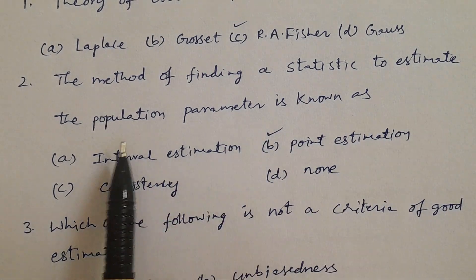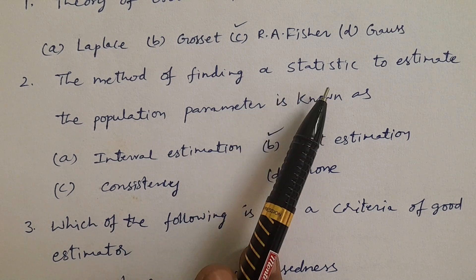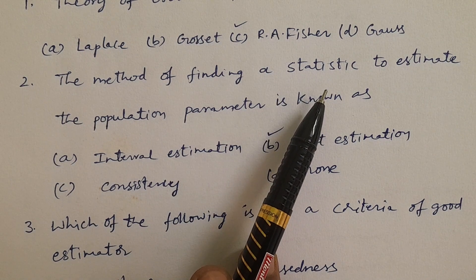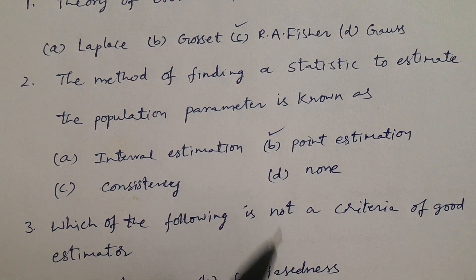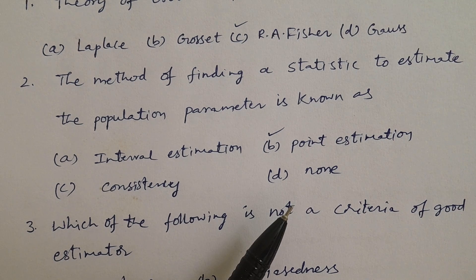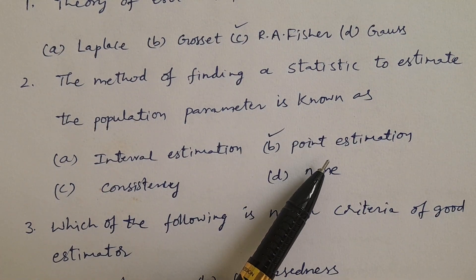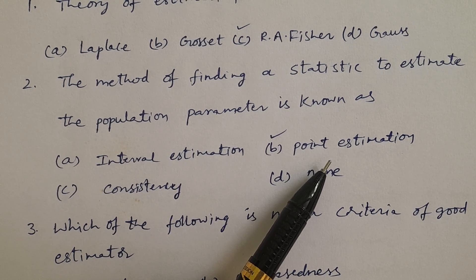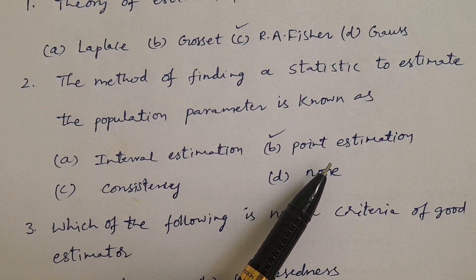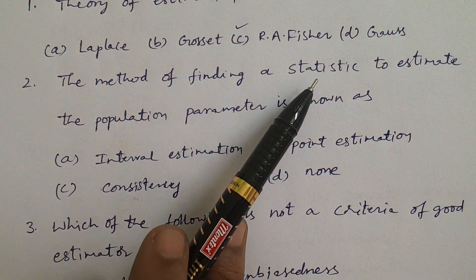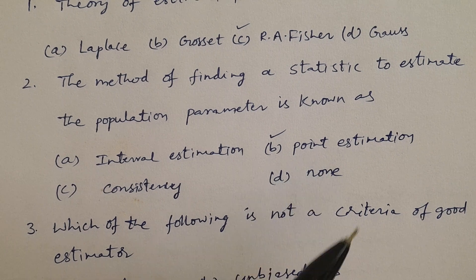In Telugu: The method of finding a single statistic to estimate the population parameter is known as point estimation. Finding an interval is known as interval estimation.